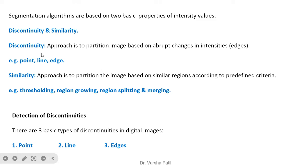The similarity approach partitions the image based on similar regions according to predefined criteria. Examples include thresholding, region growing, and region split and merge. Based on the detection of discontinuities, there are three ways: detection of points, lines, and edges.